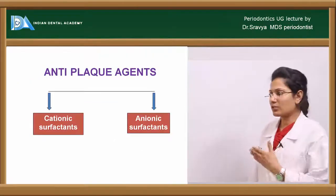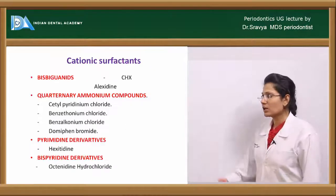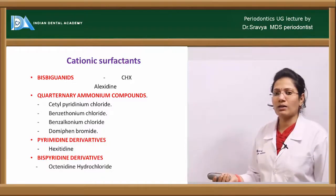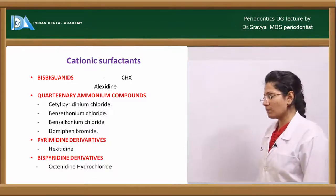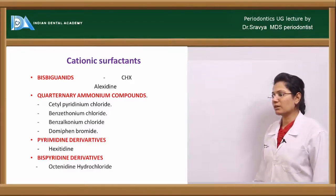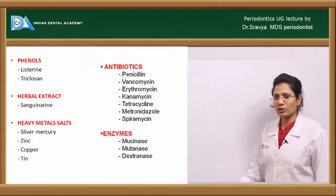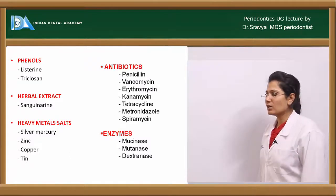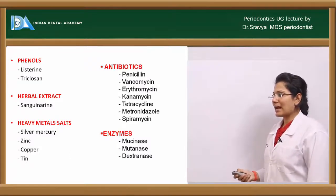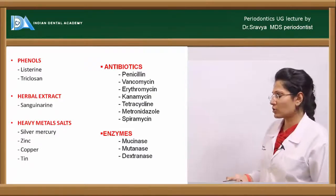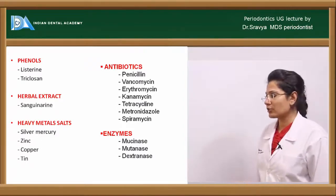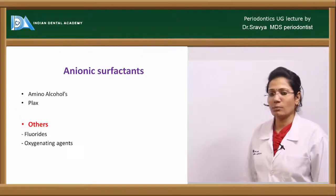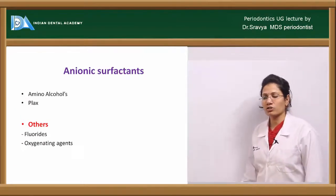Anti-plaque agents can also be classified into cationic and anionic surfactants. Cationic surfactants include bisbiguanides, cetylpyridinium chloride (quaternary ammonium compound), pyrimidine derivatives, bisperidine derivatives, phenols such as Listerine and triclosan, herbal extracts like sanguinarine, heavy metal salts like zinc, copper, and tin, antibiotics like penicillin, vancomycin, and erythromycin, and enzymes like mucinase, mutanase, and dextranases. Anionic surfactants include amino alcohols and plaques, while others include fluorides and oxygenating agents.